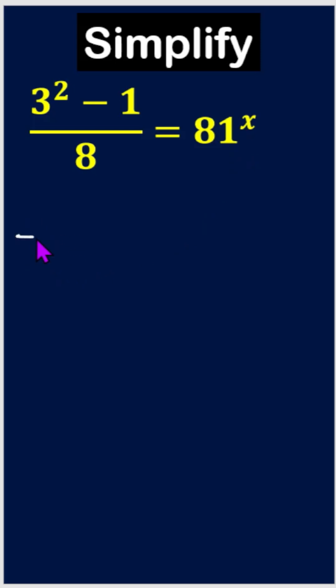So initially, we can write here is 3 squared minus 1, it means 9 minus 1, and here is divide 8 equals to 81 to the power x.